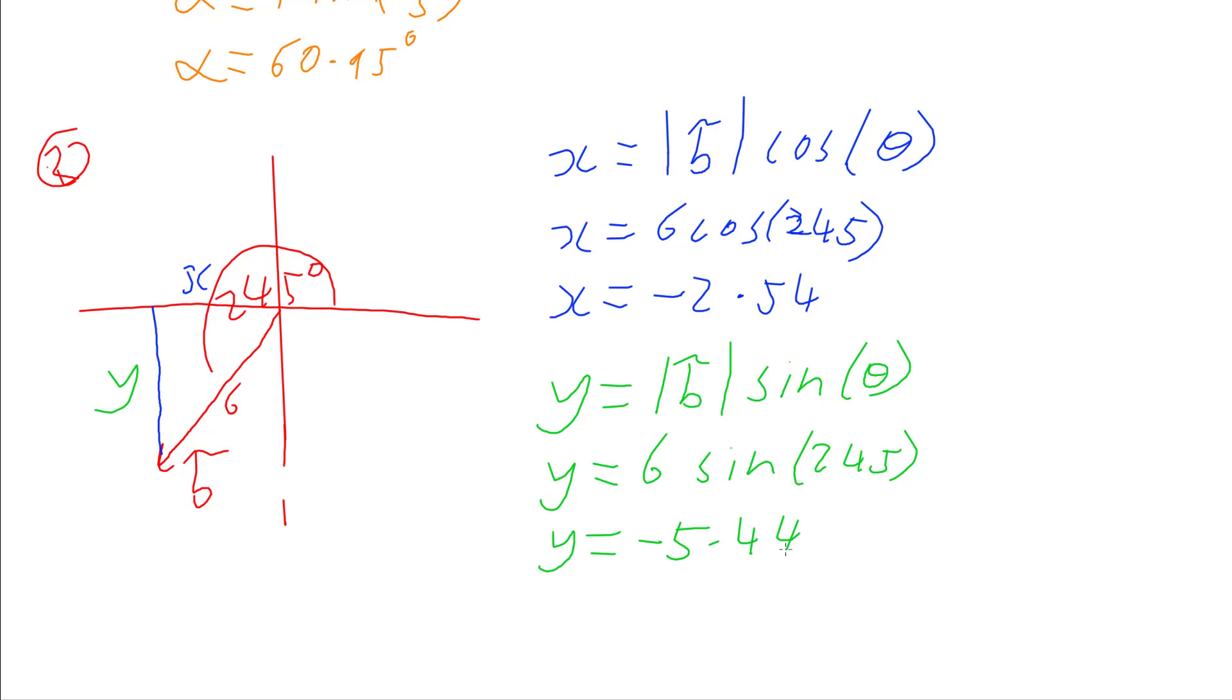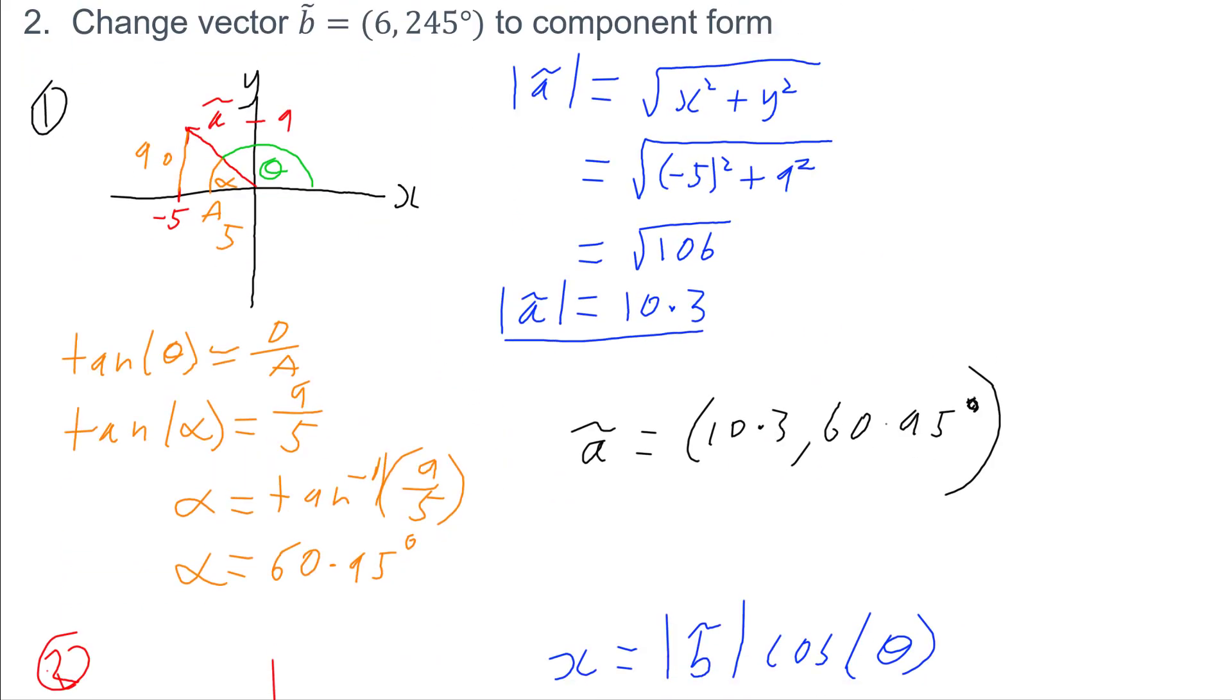And so I can write my vector B as a component vector of negative 2.54 comma negative 5.44. And that's it. So if you're trying to turn a polar vector into a component vector, the x component is magnitude cos the angle, and the y component is the magnitude sine the angle. If you're trying to turn a component vector into a polar vector, you need to use Pythagoras to get the magnitude and tan to get the angle.